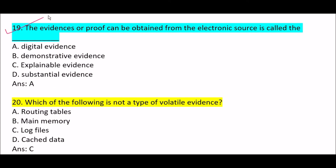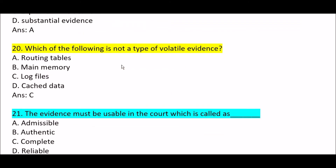Next question: the evidence or proof that can be obtained from an electronic source is called — Option A: digital evidence. Option B: demonstrative evidence. Option C: explainable evidence. Option D: substantial evidence. Correct answer is Option A — digital evidence. Evidence or proof obtained from an electronic source is called digital evidence.